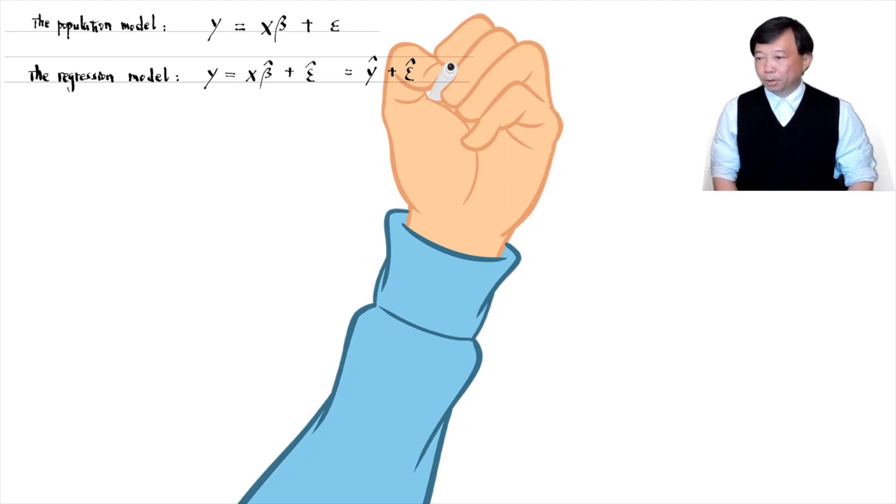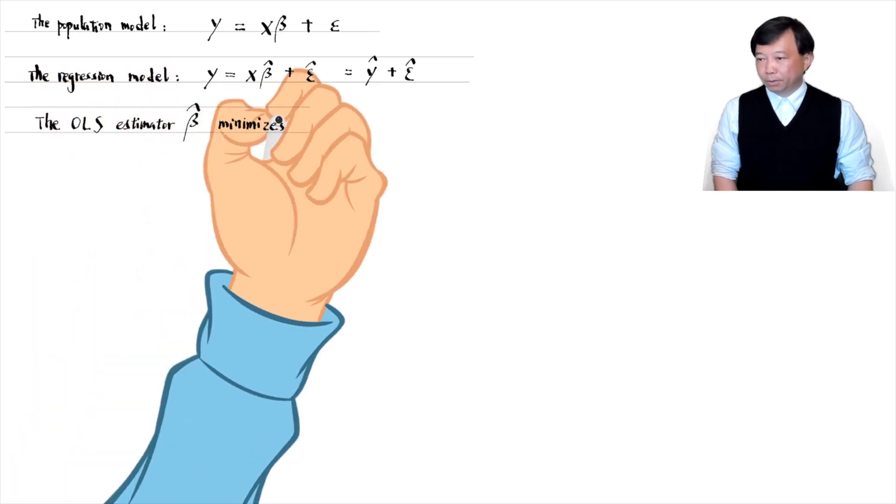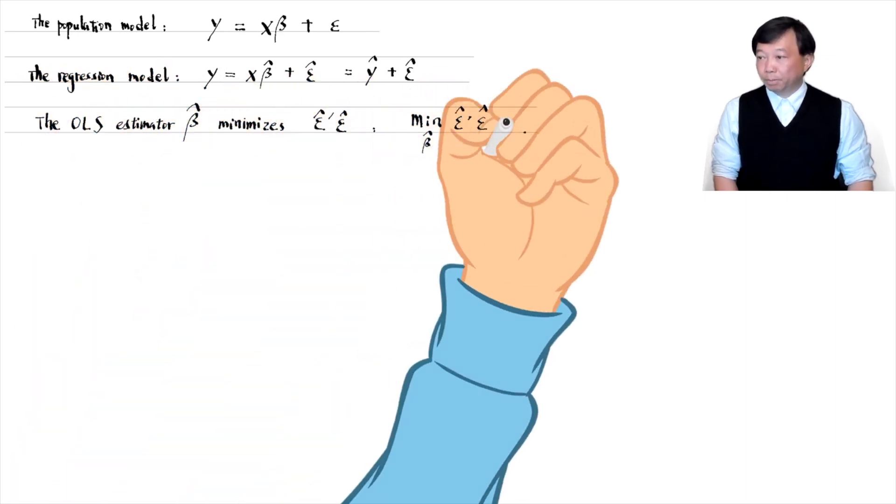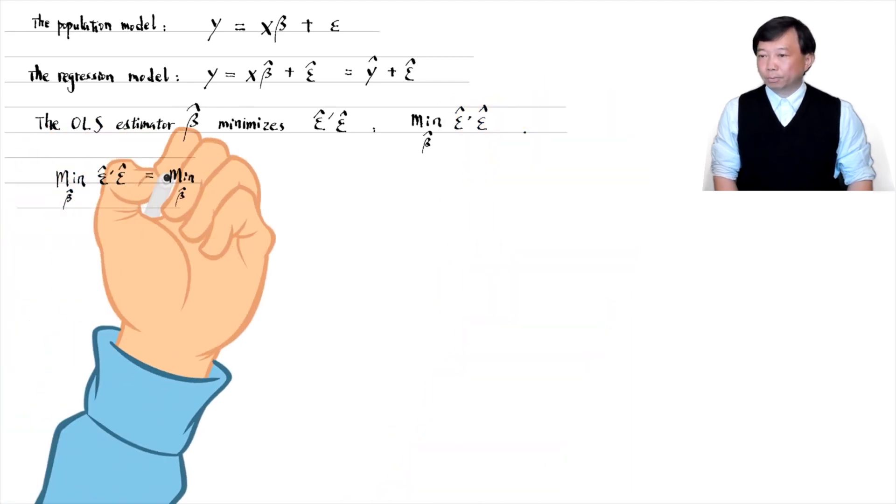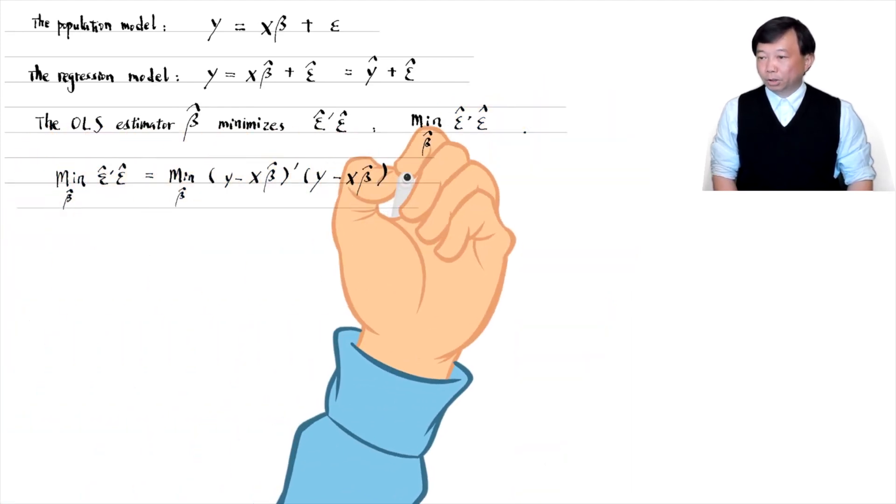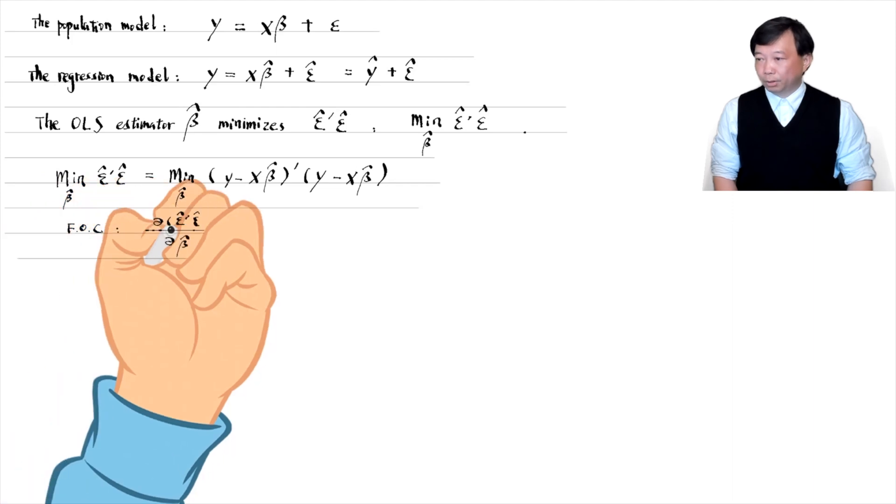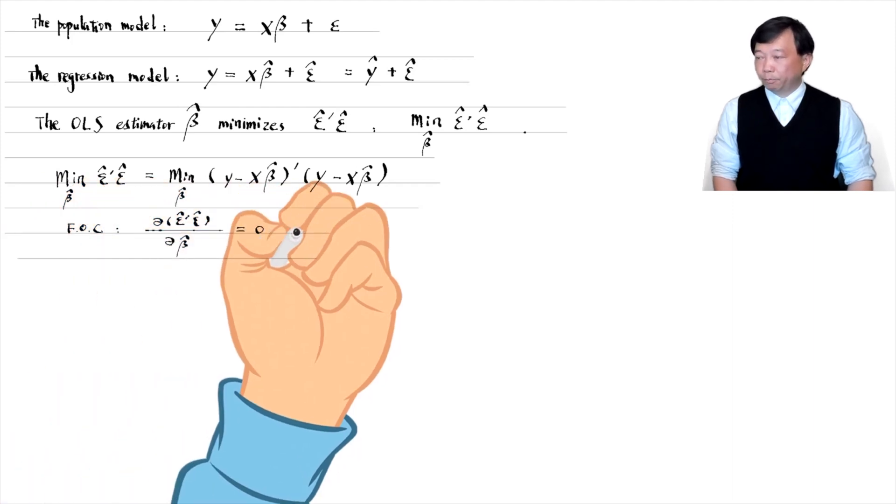The first part is the fitted value y hat and the second part is the residual. The OLS is an estimation method in which the solution beta hat minimizes the sum of squared residuals. The first order condition for minimization is that the derivative with respect to beta hat equals 0.